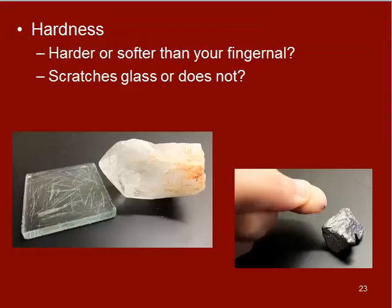The next thing is hardness. You're going to take your sample and test it on a glass plate and also using your fingernail. Basically, you're seeing whether this mineral is harder or softer than glass — does it scratch the glass or not? And then, is it harder or softer than your fingernail? Can you scratch the mineral with your fingernail and only get bits of it off on your finger, or does it destroy your nail when you try that? Make sure you watch the lab prep videos — they'll describe the correct procedures to do this in lab.